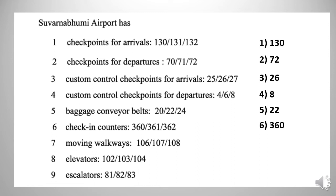Exercise number 7: the number of moving walkways. The options are 106, 107, and 108. The correct answer is 107. Exercise number 8: the number of elevators. The options are 102, 103, and 104. The correct answer is 102 elevators. Exercise number 9: escalators. The options are 81, 82, and 83. The correct answer is 83.